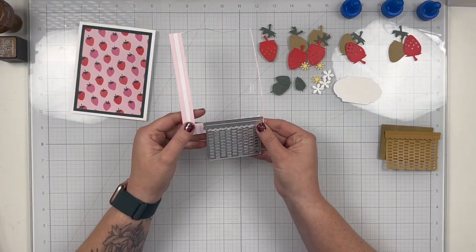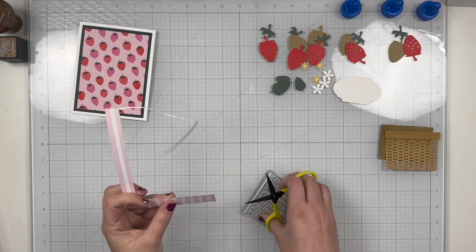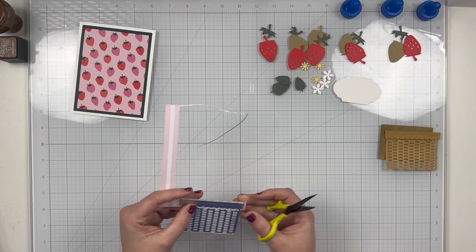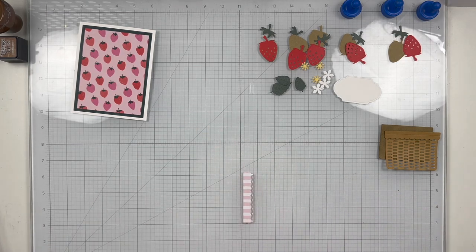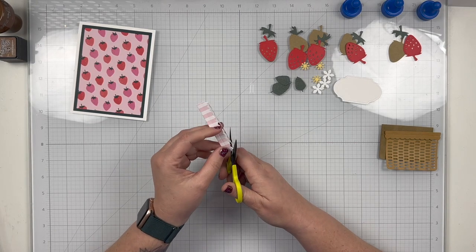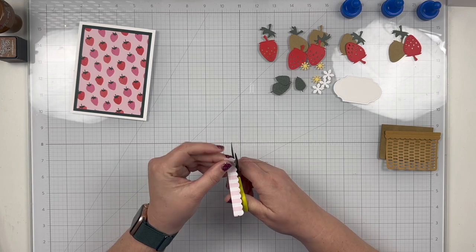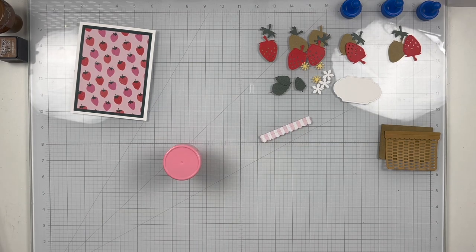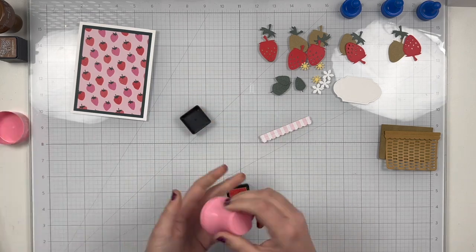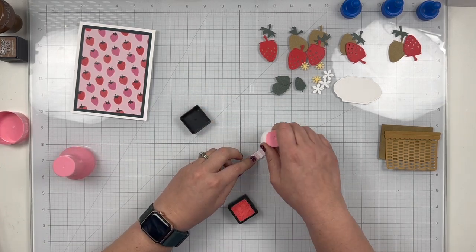I decided that I wanted to put kind of a little fabric looking trim on the top of my basket, and I have just enough left over of the piece of pattern paper that I used to cut my strawberry background. On the back side of it, there's this really adorable striped pink and white pattern, so I used that to trim just the top, or sorry, die cut just the top of the basket, and I trimmed down the excess paper that I didn't need.